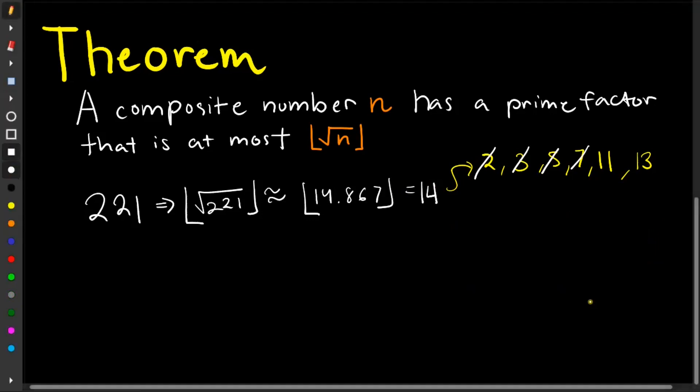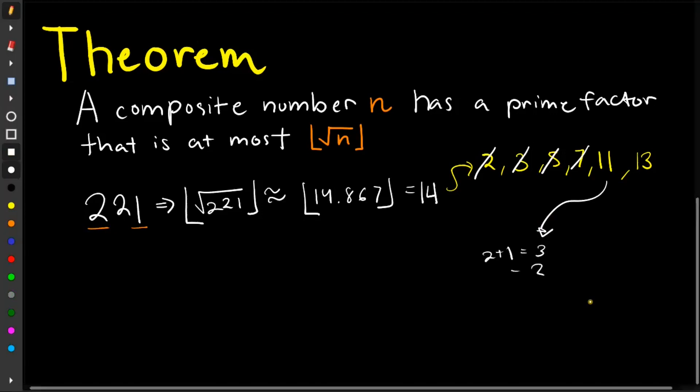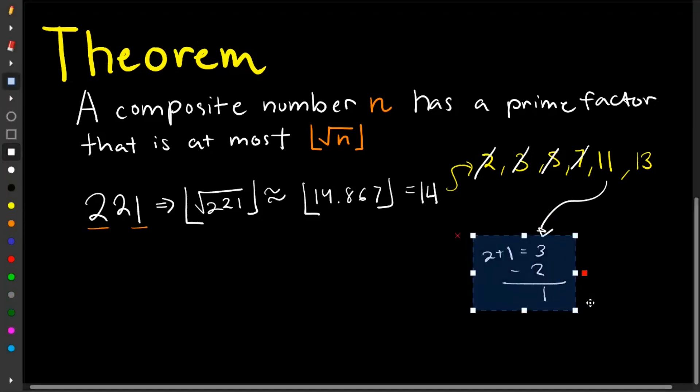Now for 11, we have applying the divisibility rule. So we know that the difference of the sum of its alternating digits must be equal to 0 or divisible by 11. So we have the alternating digits. So 2 plus 1 is equal to 3 minus 2 will give us 1. So it's neither divisible by 11 nor 0. So it's not divisible by 11.